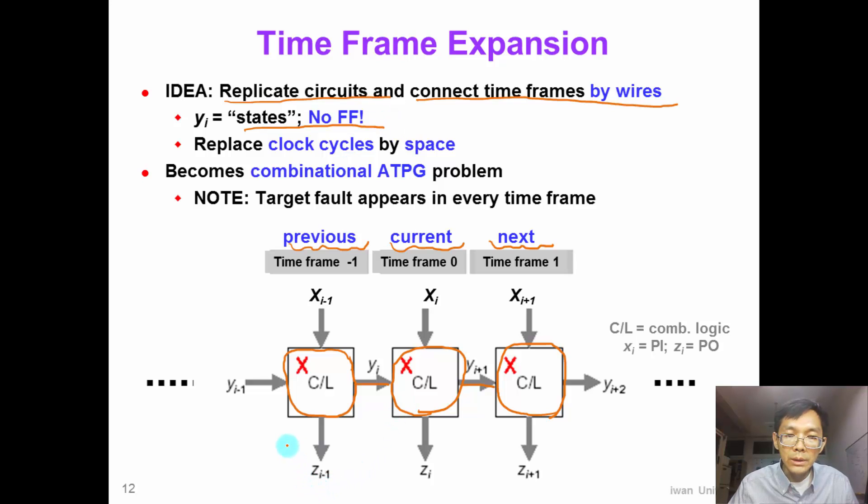These three copies together become a very large combinational ATPG problem. So we can simply replace the clock cycles by memory space. Since we already know how to solve this combinational ATPG problem, we can simply apply our previous techniques such as the D-algorithm or the PODEM algorithm. The only difference is that the target fault appears in every time frame, so we can have multiple faults at the same time.